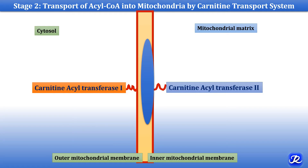Stage 2 is transport of acyl-CoA into the mitochondria by the carnitine transport system. Acyl-CoA cannot be transported through the inner mitochondrial membrane directly. The outer mitochondrial membrane contains carnitine acyl transferase 1, and the inner mitochondrial membrane contains carnitine acyl transferase 2. A translocase protein transports carnitine and acyl-carnitine between compartments.